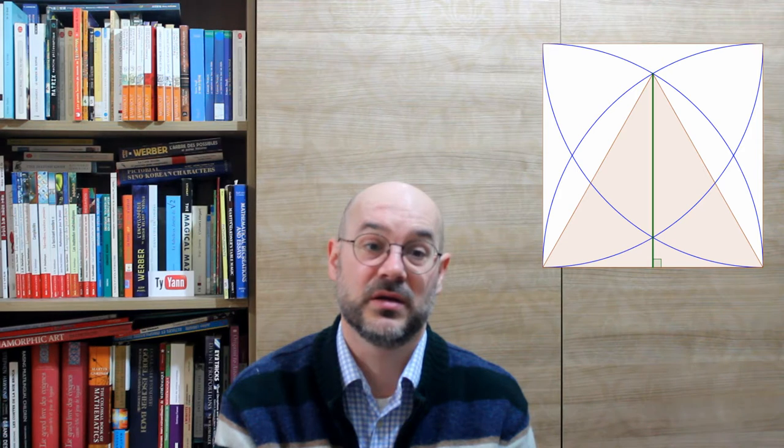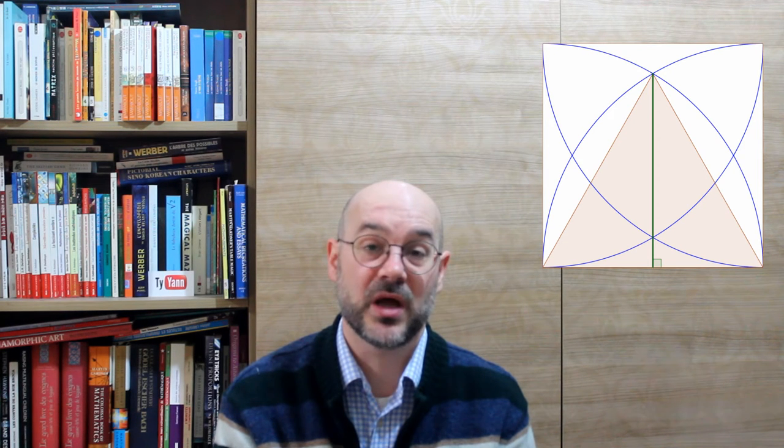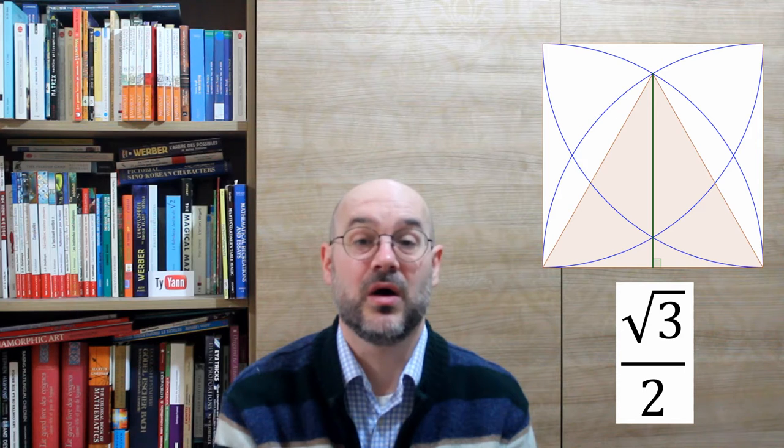With the Pythagorean theorem, we end up with the altitude being the square root of 3 over 2.